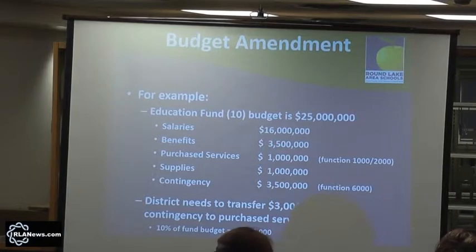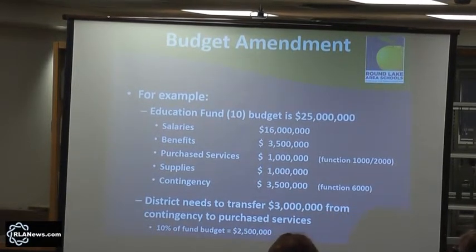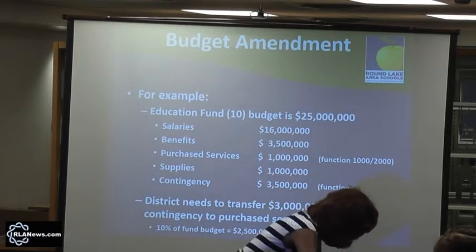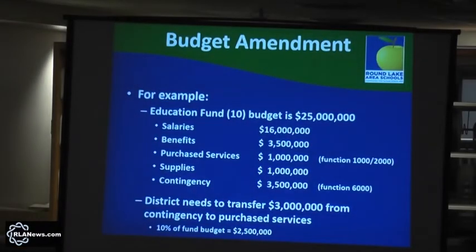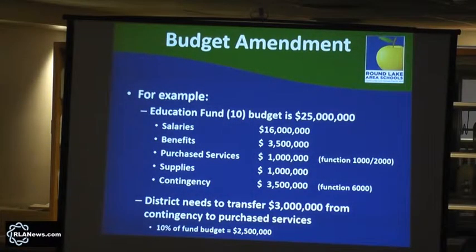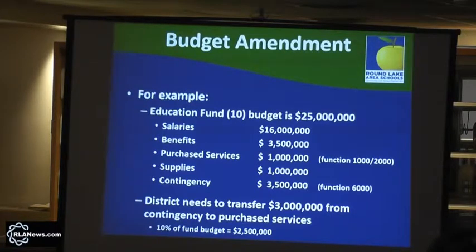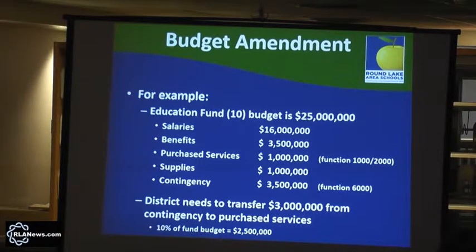An example: on an individual line item — this is a made-up budget — the contingency line item is a function of $6,000. The other purchase services are usually a function of $1,000 and $2,000: $1,000 being instructional, $2,000 being support services. In the chart of accounts, that indicates why you are spending money — is it for instructional students, support of students — and $6,000 is for contingency. So if you need to move $3,000, that's more than 10% of the overall budget of $2.5 million, and the state says you need to do a budget amendment.